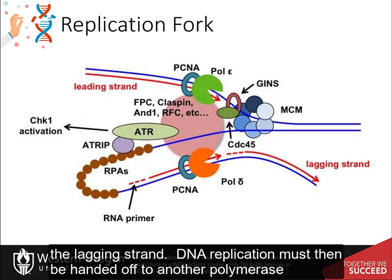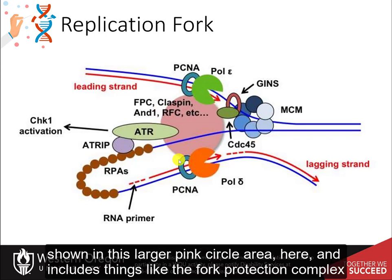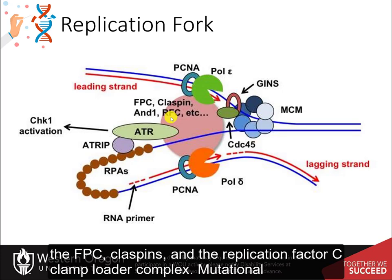DNA replication must then be handed off to another polymerase to continue synthesis. The polymerase switching requires clamp loaders, shown in this larger pink circle area, and includes things like the fork protection complex (FPC), claspins, and the replication factor C clamp loader complex.